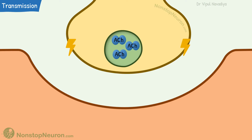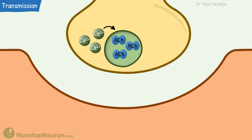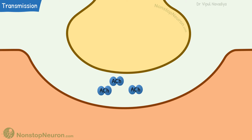Release of acetylcholine is initiated by an incoming impulse. The impulse causes the opening of voltage-gated calcium channels, so calcium ions diffuse into the nerve terminal. They initiate a series of events that ultimately result in exocytosis of the vesicle, so acetylcholine is released into the synaptic cleft. Here it binds with the acetylcholine receptors and opens the channel.